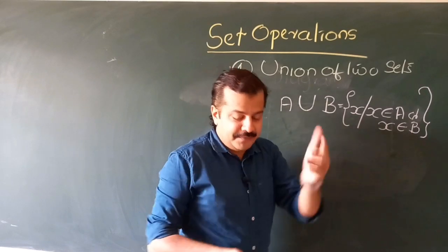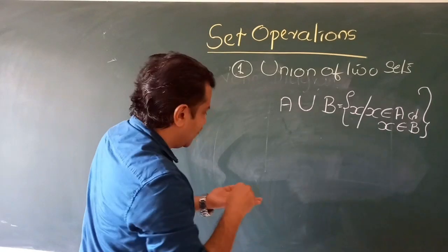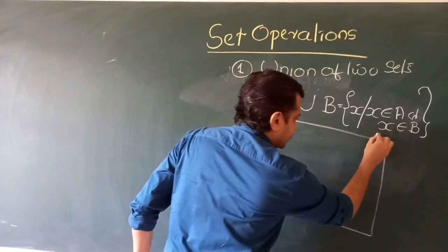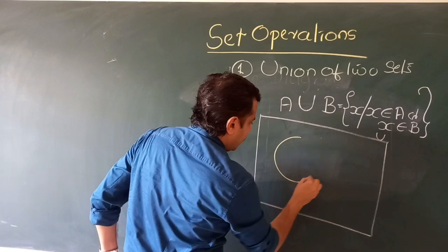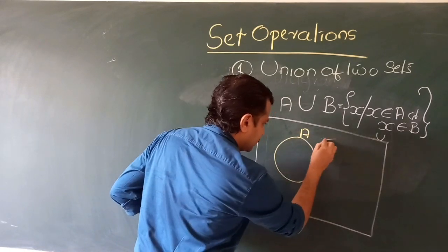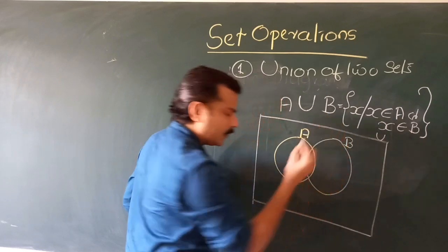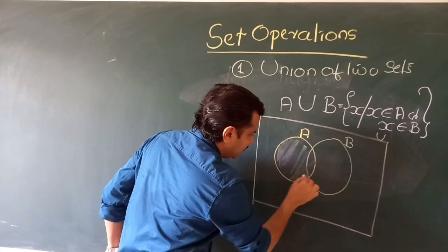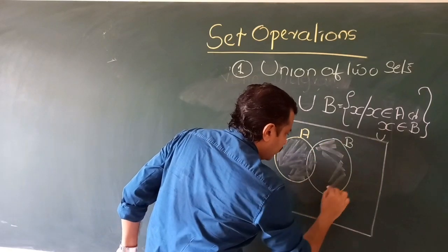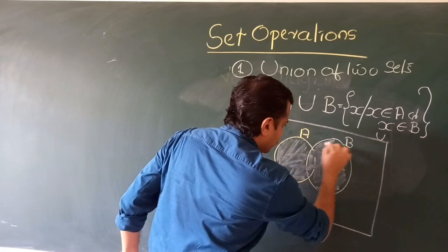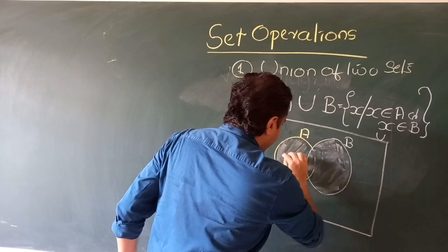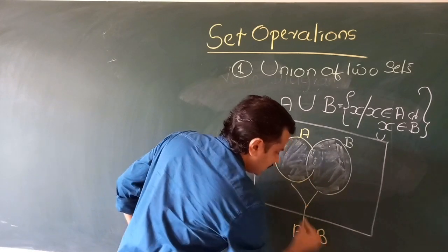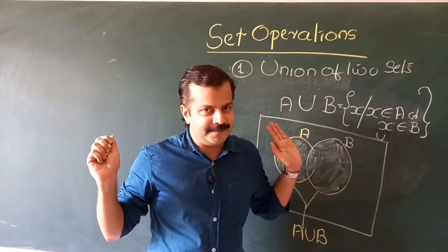If we explain A union B in terms of the Venn diagram — we draw a universal set as a rectangle, and inside it we have set A and set B drawn as circles. A union B means all the elements of set A as well as all the elements of set B will be there in A union B. So the entire shaded region covering both circles represents A union B.